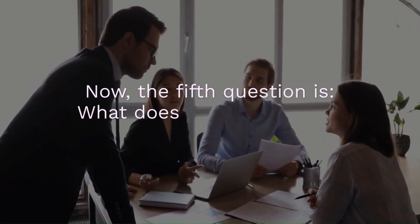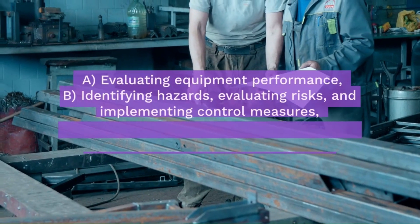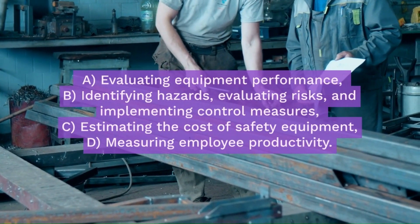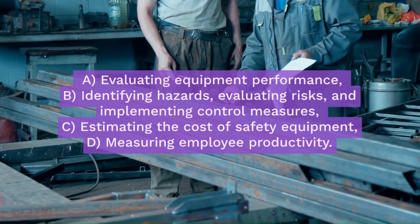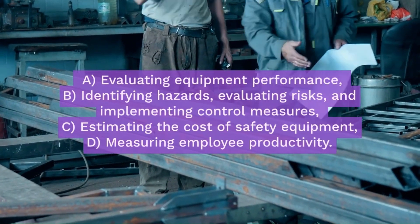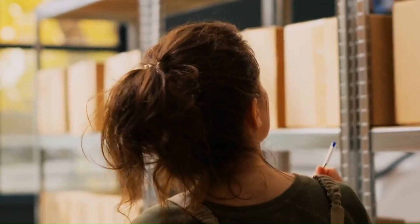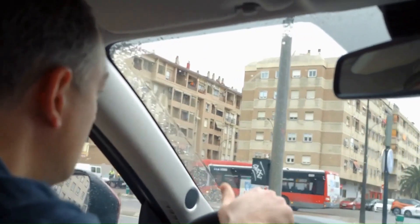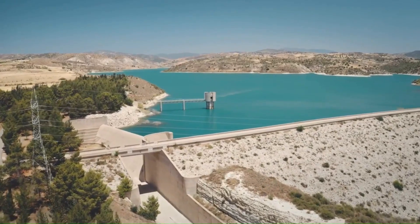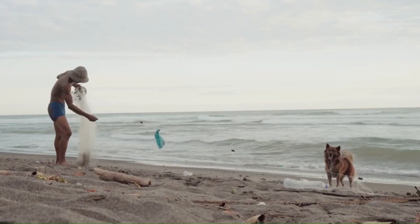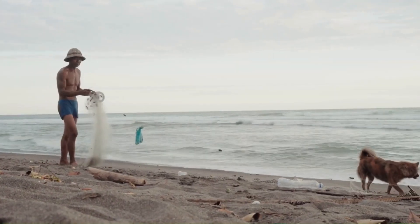Question 5: What does risk assessment involve? The options are: evaluating equipment performance, identifying hazards and evaluating risks and implementing control measures, estimating the cost of safety equipment, or measuring employee productivity. The correct answer is identifying hazards, evaluating risks, and implementing control measures. Risk assessment is like checking the weather before going on a trip — it helps you prepare for potential dangers and take action to stay safe. Risk assessment is a safety net catching potential dangers before they cause harm.